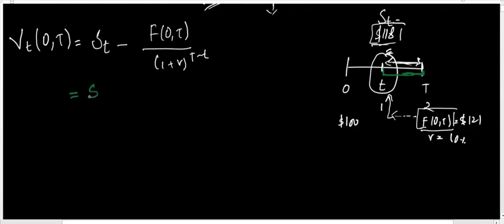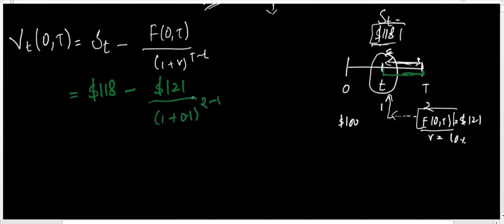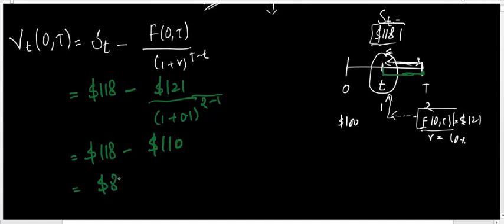The spot price at time t is $118. The forward price calculated is $121. The rate of interest is 10% and the remaining time period is 2 − 1 = 1 year. So I discount $121 by 1.1, which gives $110. Therefore the value of the forward contract is $118 − $110 = $8, which represents a profit to the long position.